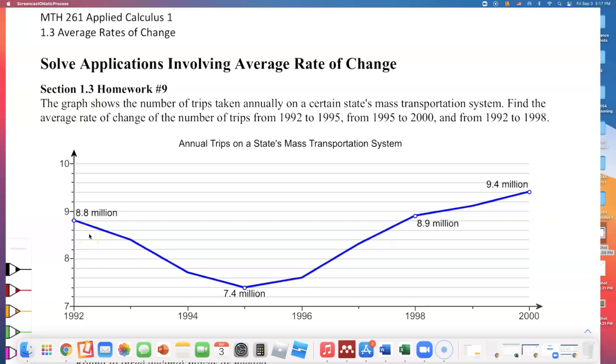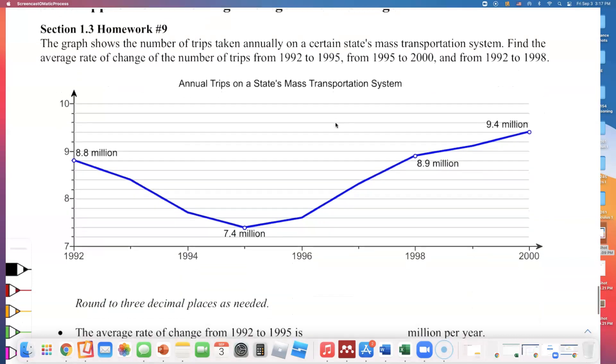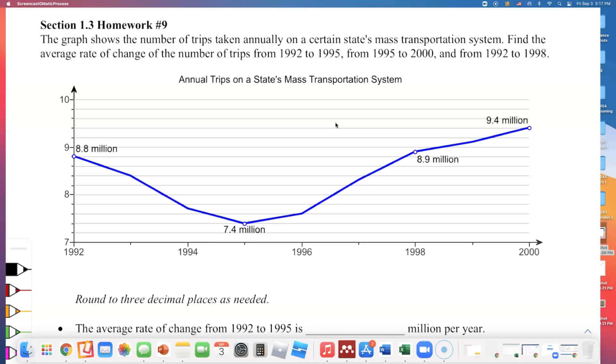This is similar to your section 1.3 homework number 9 for solving applications involving average rate of change for Math 261. The graph shows the number of trips taken annually on a certain state's mass transportation system. So let me label the x-axis, or the horizontal axis.